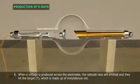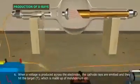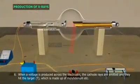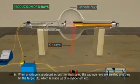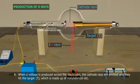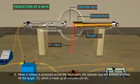When a voltage is applied across the electrodes, the cathode rays are emitted and they hit the target T, which is made up of molybdenum.